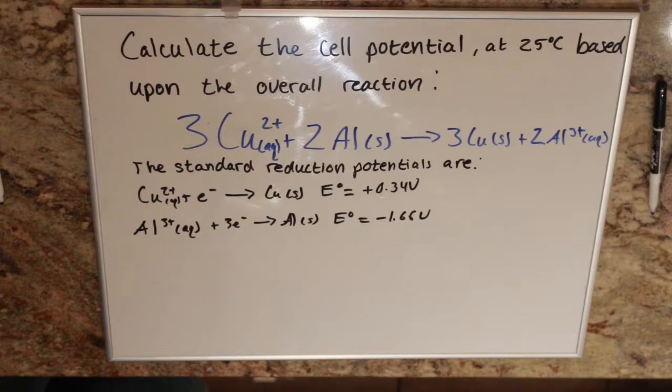This question is asking us to calculate the cell potential at 25 degrees Celsius based upon the overall reaction of 3 copper ions plus 2 aluminum solid gives us 3 copper solid and 2 aluminum ions.